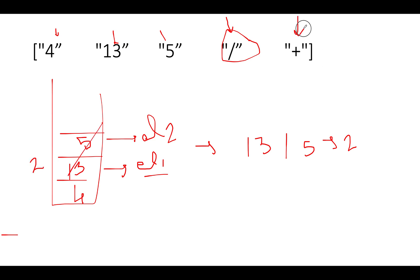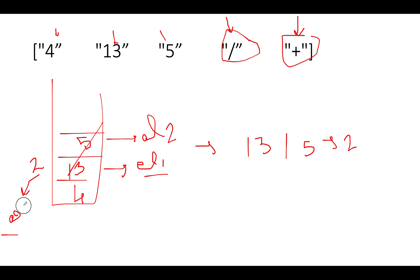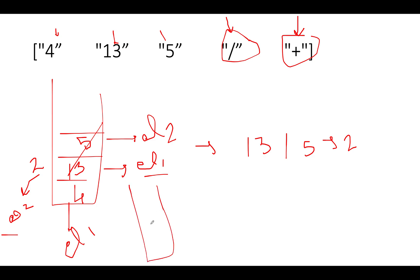Next we have plus — again an operator. We pull out two elements: element two is two, element one is four. We perform four plus two, which is six. The answer of this expression is six.